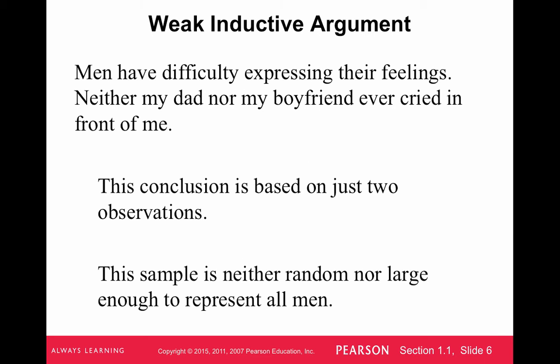Here's a weak inductive argument that comes from not as many examples. It says men have difficulty expressing their feelings — that's the hypothesis or conjecture. The examples are: neither my dad nor my boyfriend ever cried in front of me. This conclusion is based on just two observations, going from observations about a dad and a boyfriend to a general claim about all men. The sample is not random nor large, so a counter example would be finding a man who has no problem expressing his feelings, which would prove this statement wrong.